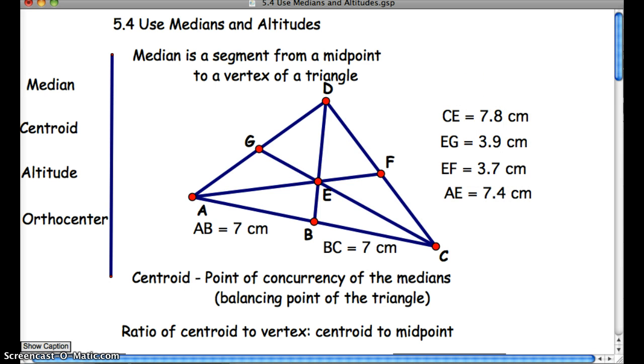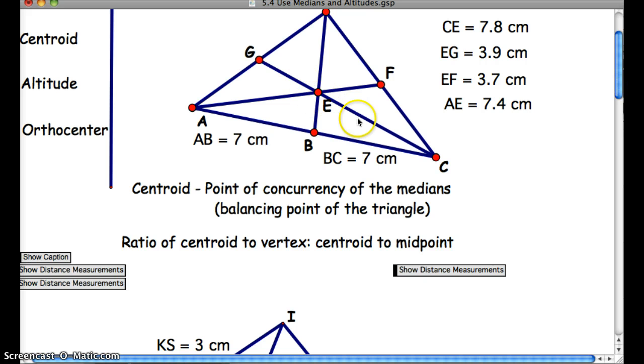Now the reason I asked you a second ago to look at the comparison of EG and CE and AE and EF is I wanted to talk about the ratio of the centroid to the vertex, or compared to the ratio of the centroid to the midpoint. So it's two to one, right? Because you said that this length, AE, was two times. So AE, 7.4, was two times as long as EF, which is 3.7. So from the centroid to the vertex, it's twice as long as from the centroid to the actual midpoint. So two to one.